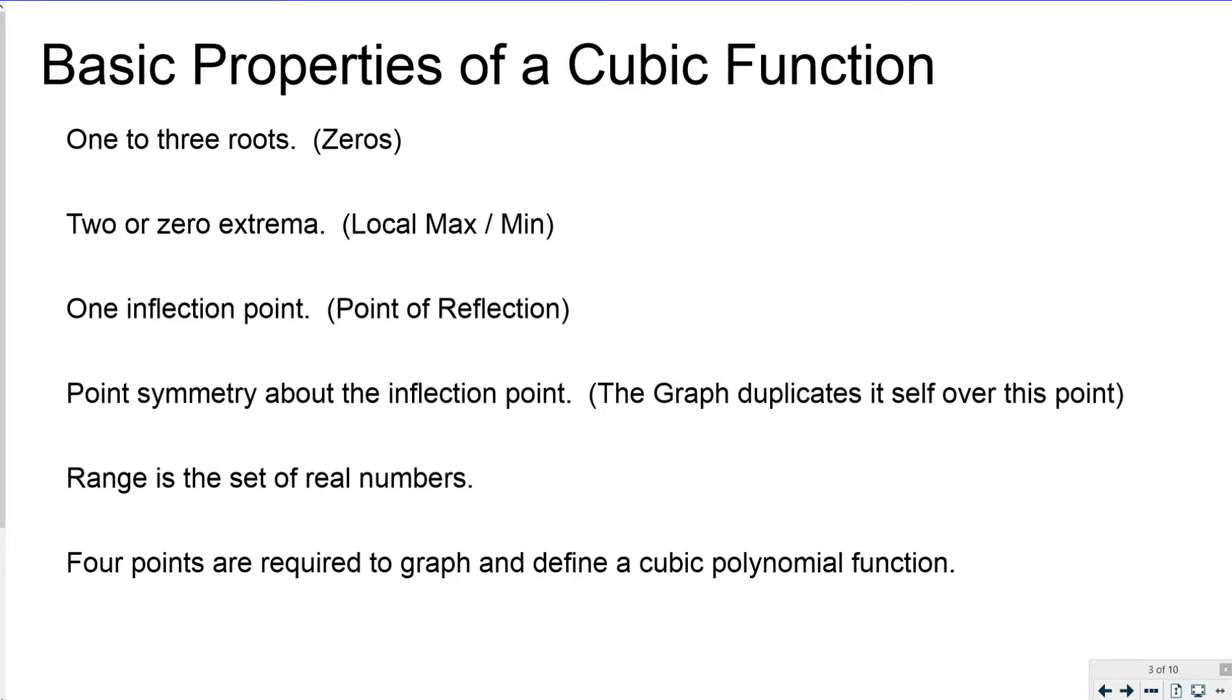The range of a cubic function is the set of real numbers, which brings up an interesting point that the domain is also the set of real numbers. You can use the specialized R symbol to recognize that it's all the real numbers. And it takes you at least 4 points to graph and define a cubic polynomial function.